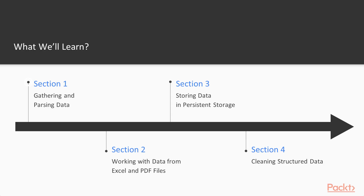I will begin by introducing each section. In Section 1, you will be looking at gathering and parsing data. You will learn how to extract information from CSV files and JSON files, and also how to get information out of the public web — that is, parsing information from public web pages like Wikipedia pages. We will look into Python modules used to accomplish all of these tasks.